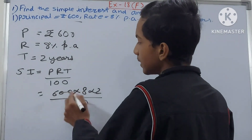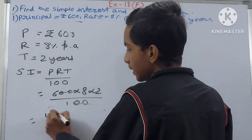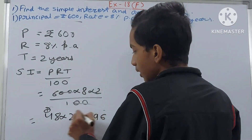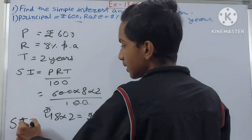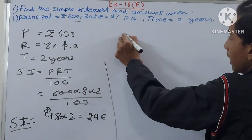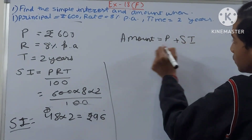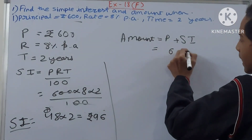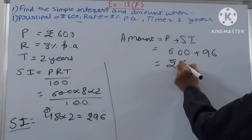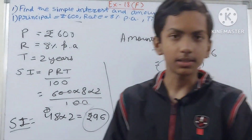Cancelling, we get: 6 × 8 = 48, and 48 × 2 = 96. So SI = rupees 96. Now we find the amount: Amount = Principal + SI = 600 + 96 = rupees 696. So the simple interest is rupees 96 and the amount is rupees 696.